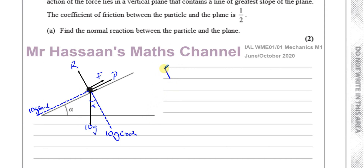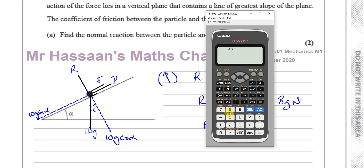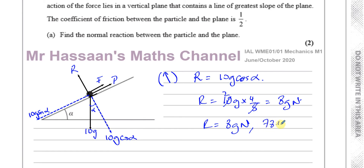To find R, I resolve forces perpendicular to the plane: R equals 10g times cosine alpha. We already worked out cosine alpha is 4 fifths, so it's 10g times 4 fifths — the 5 cancels with 10 to give 2 — that's 8g newtons. Multiplying 8 by 9.8 gives 78.4 newtons. You can also write it as 78 newtons to 2SF since we used g. But leaving it as 8g newtons or 78.4 newtons is perfectly fine. It's safer to keep to 3SF, as 3SF is acceptable in all cases.